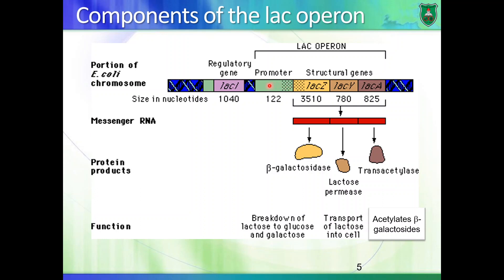The lac operon has its own promoter region — this is the RNA polymerase binding site. Transcription of this operon produces a single unit of messenger RNA, and each part of the messenger RNA produces a different protein with a different function. There is another gene located far away from the lac operon on the same chromosome — known as the lac I gene, where I stands for inhibitor.